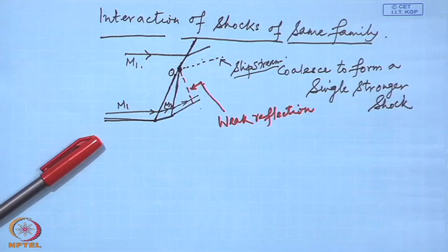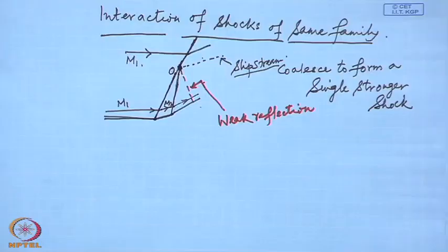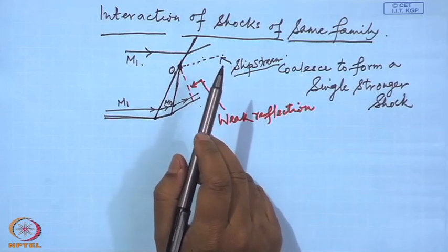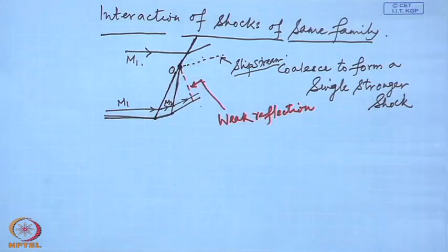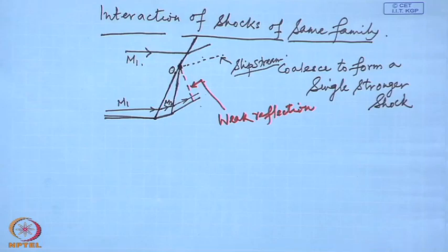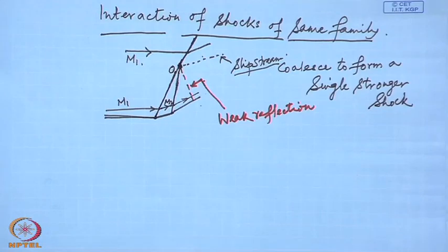So, this is what usually happens when two shocks of the same family interact: they merge to form a single stronger shock. However, a small part can reflect back as a much weaker wave which can be either compression or expansion depending on the relative strength of the two interacting shocks. A slipstream develops at the point of intersection, separating the flow into two different regions having different entropy, density, temperature, and flow velocity. Since this slipstream represents a jump in tangential velocity, it is essentially a vortex line.